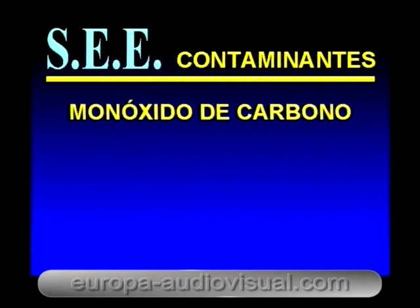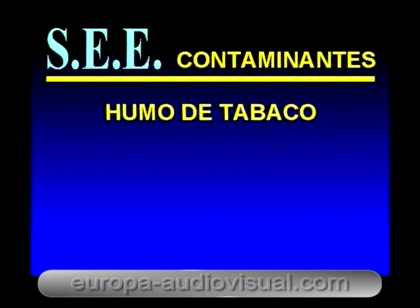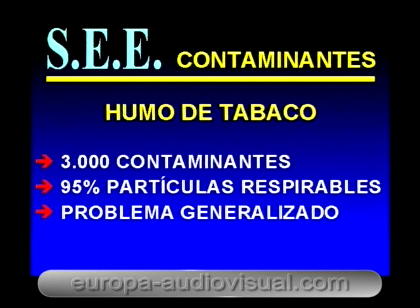Monóxido de carbono: se forma por combustión incompleta de sustancias que contienen carbono. Su presencia en medios no industriales es debida a la emisión por motores de combustión interna en garajes dentro del edificio, la toma inadecuada de aire fresco exterior y fumar. Tiene un efecto asfixiante al unirse a la hemoglobina de la sangre, disminuyendo la capacidad de aporte de oxígeno a los tejidos. Humo de tabaco: el acto de fumar representa la liberación en el aire de una compleja mezcla de más de 3.000 productos químicos contaminantes conocidos. Aproximadamente el 95% de las partículas del humo de tabaco se hallan dentro del intervalo respirable. Su presencia en el aire del interior de un edificio es un problema que afecta tanto a fumadores como a no fumadores.